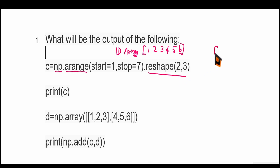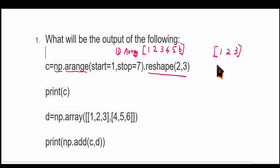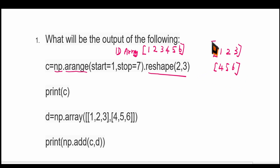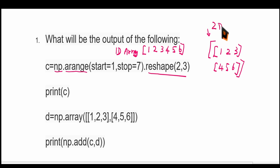It may be like this: 1, 2, 3 — this is the first row. The second row will be 4, 5, 6. And since this is a 2D array, it should be enclosed by square brackets. So if you print the value of C, it will be like this.